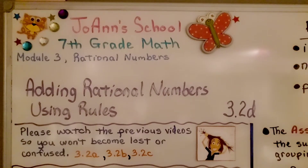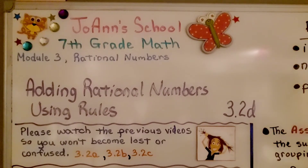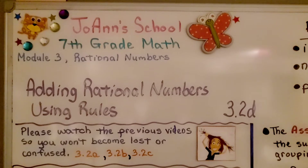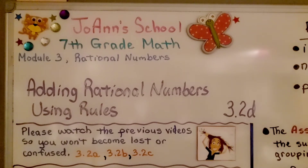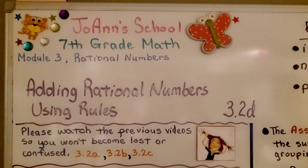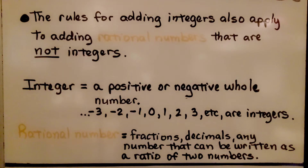This is the last part of lesson 3.2 — we're at 3.2d. We're going to be adding rational numbers using rules. The rules for adding integers also apply to adding rational numbers that are not integers.